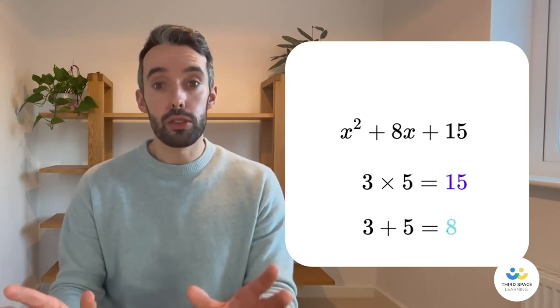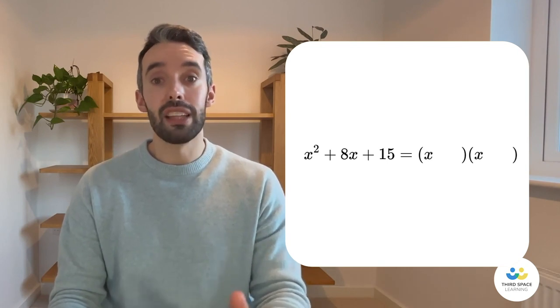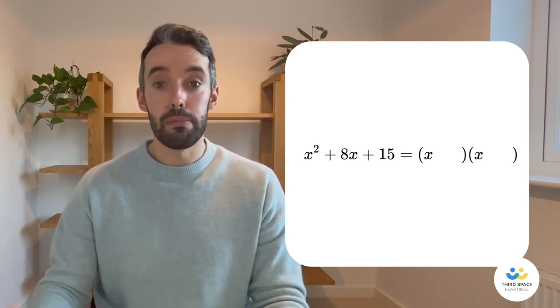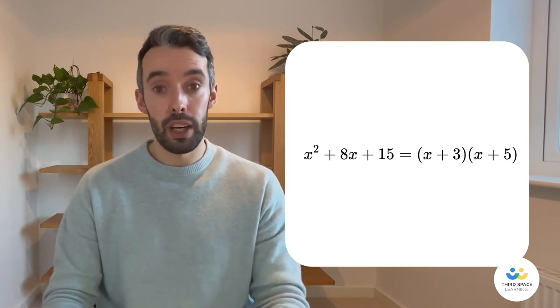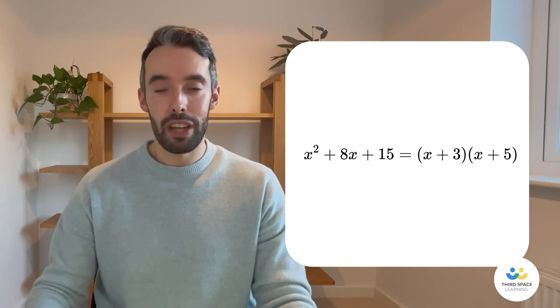All we do now is open up a pair of double brackets and put an x at the start of one and at the start of the other one, because x is a variable. And then put the plus 3 and the plus 5 in the brackets. And that's it, fully factorised.